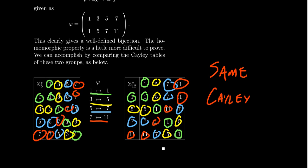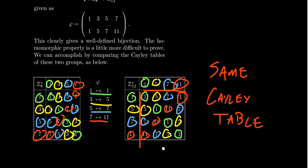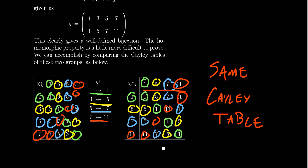Earlier in this series, we explored the idea that two groups have the same Cayley table up to relabeling — that was a precursor to this idea of isomorphism. If two groups have the same Cayley table, they necessarily have to be isomorphic. You have to be careful though: for a group of a million elements, the Cayley table is enormous. Also, if you list elements in different orders, the colors won't match up. You must list elements in the same order according to the bijection, and then you'll see the same Cayley table emerge.